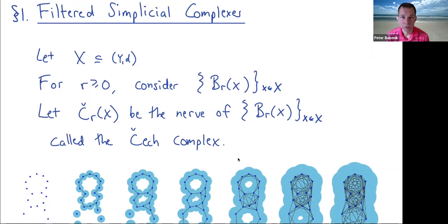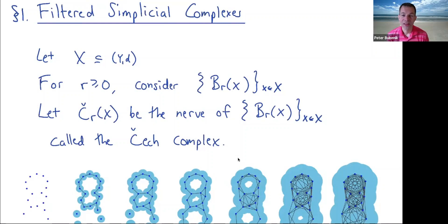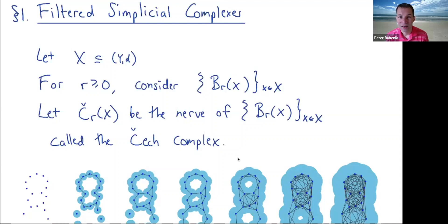One convenient way to do that is to have diagrams of simplicial complexes, and in particular diagrams in which all the maps are inclusion maps — these will be called filtered simplicial complexes. Depending on the application, there are many ways to do this, but my focus will be on some of the simplest ways. For those of you who are serious about doing applied mathematics, the simplest construction probably isn't the best one, and you should think carefully about what the best construction is for your data.